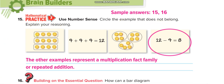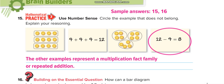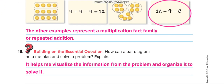Circle the example that does not belong and explain your reasoning. Four times four equals sixteen, four groups of four, and three times four equals twelve. Twelve minus four equals eight. All the first three expressions equal twelve, but this one equals eight, so that one is different.